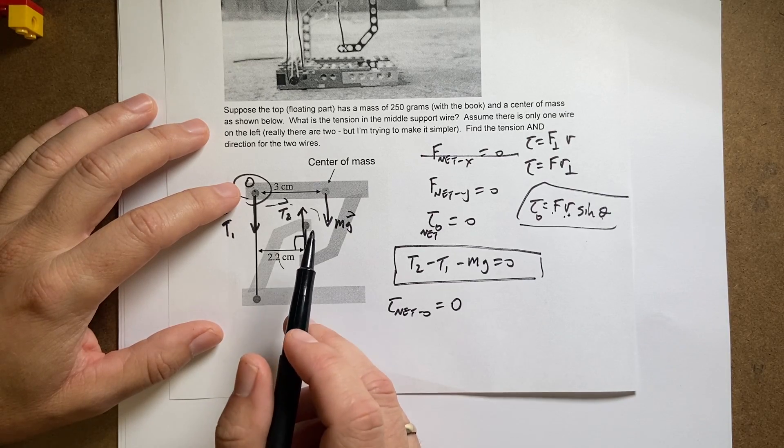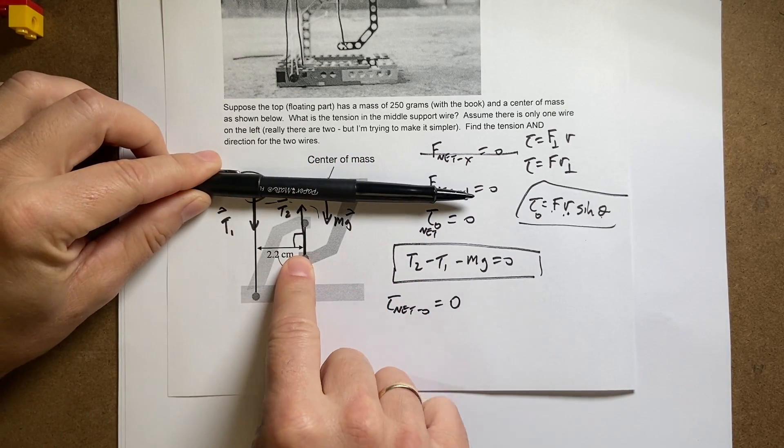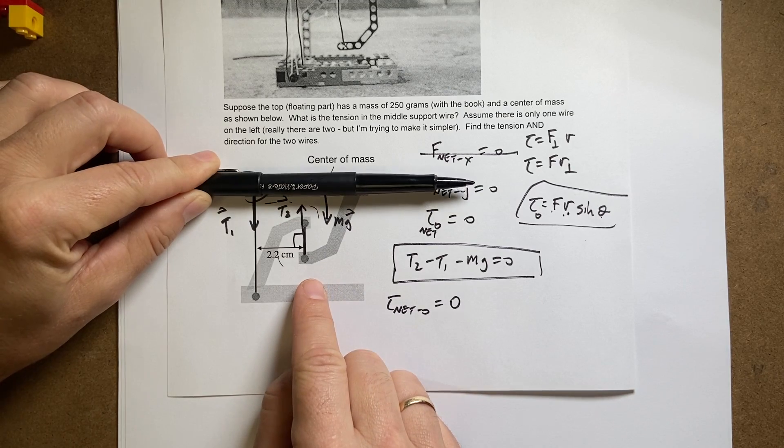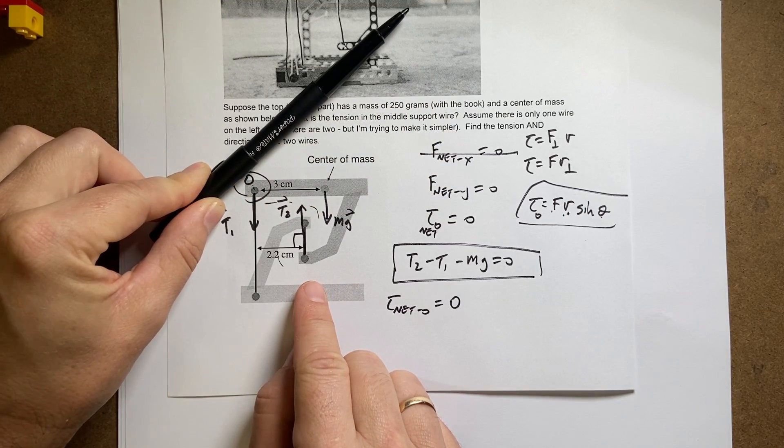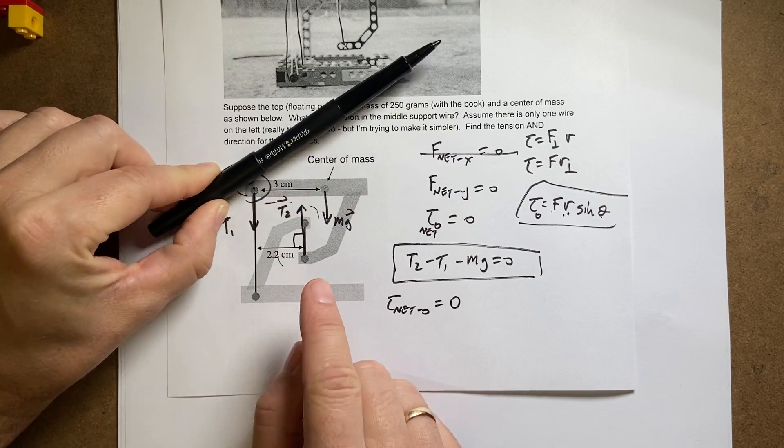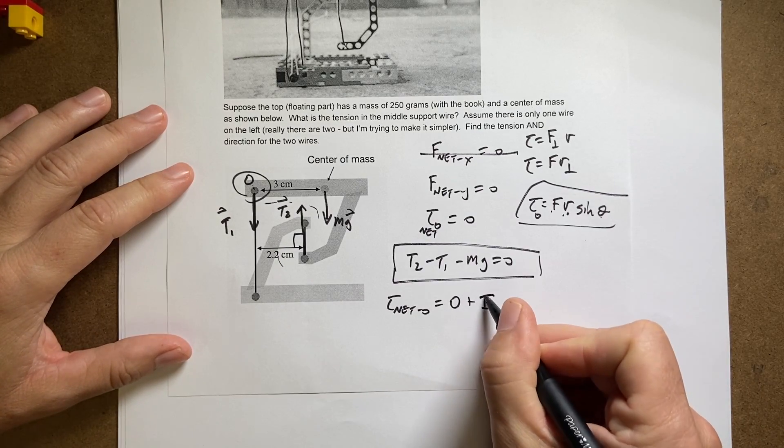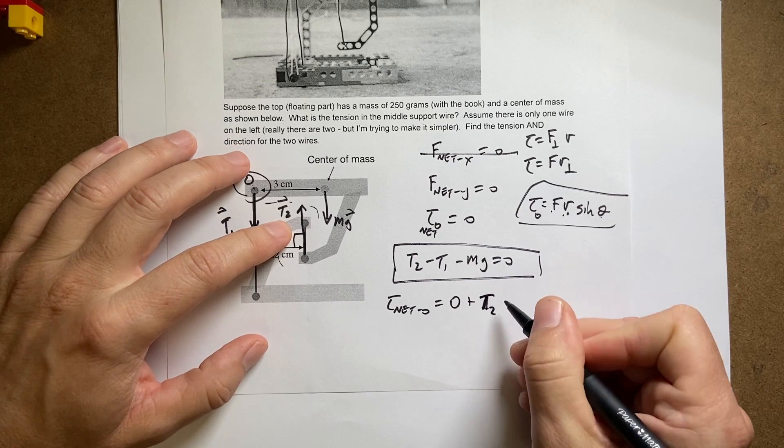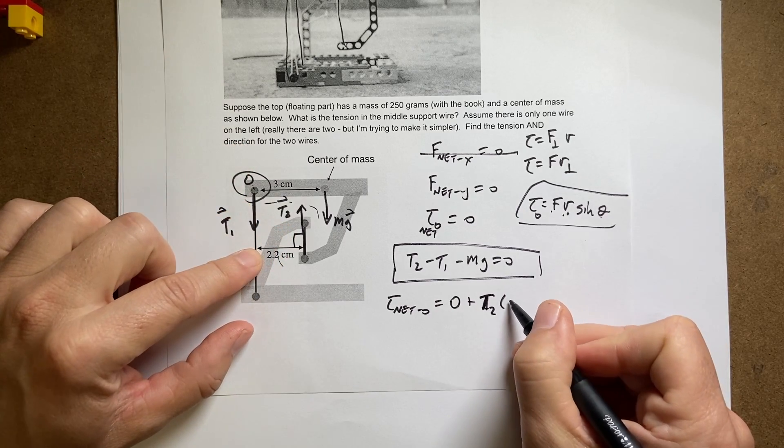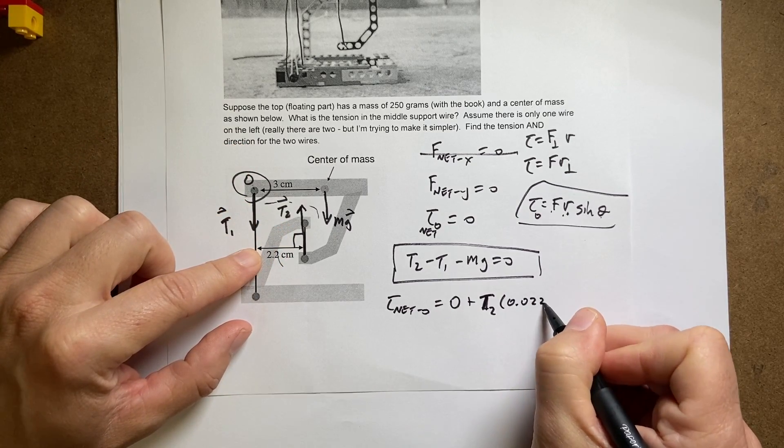Now, the next question, is that going to be a positive or negative torque? We say that if that force is pushing up on this thing, it would make it rotate that way, which is counterclockwise. Counterclockwise is going to be positive, so I'm going to say plus T2, times the distance, which is 0.022 meters.